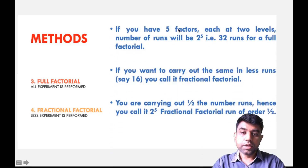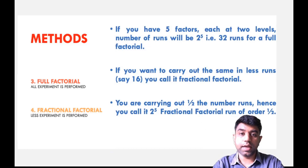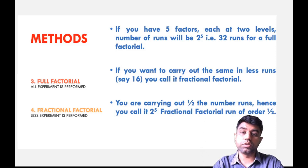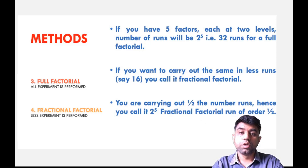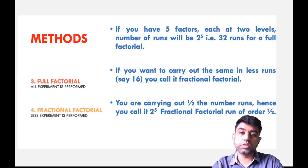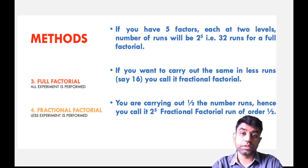Let's recall the example of a sandwich. If you are having five different factors which influence the taste of a sandwich — let's say salt, sugar, oven temperature, the stuffings you are using, and the sauce you are using — each factor can be set at two levels.